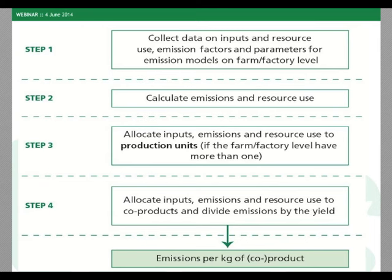The first step is to collect all data on inputs and resource use related to the production or processing. Based on the collected information, emissions and resource use are calculated as totals. The third step handles inputs used for more than one production unit or production cycle — in crop production these must be allocated to one unit or cycle. Then in step four, all inputs at the unit level are allocated to co-products within that production unit, giving the final result: emissions per kilogram of co-product.